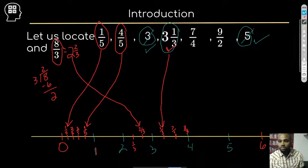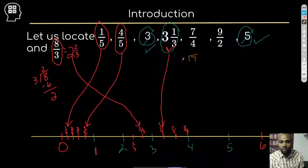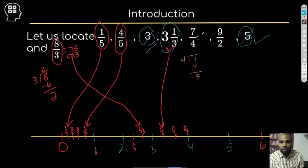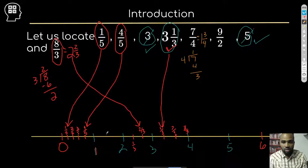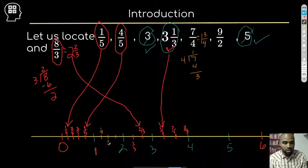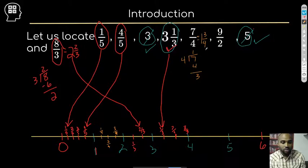Seven fourths — let's convert that. Seven divided by four: four goes in once, that's four, remainder three. So that's one and three fourths. It's after one, between one and two. We're going to break that space into fourths — one fourth, two fourths, three fourths. So one and three fourths is right there.